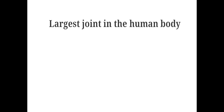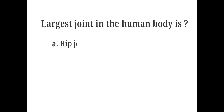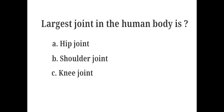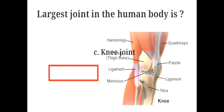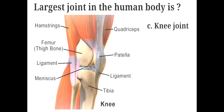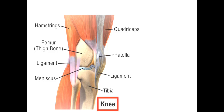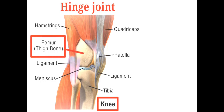The largest joint in the human body is: A. Hip joint, B. Shoulder joint, C. Knee joint, D. Elbow joint. The answer is C. Knee joint. The knee joint is a hinge joint consisting of three parts: the lower end of the femur rotates on the upper end of the tibia, and the kneecap (patella) slides in a groove on the end of the femur.